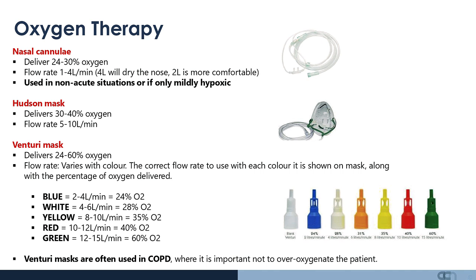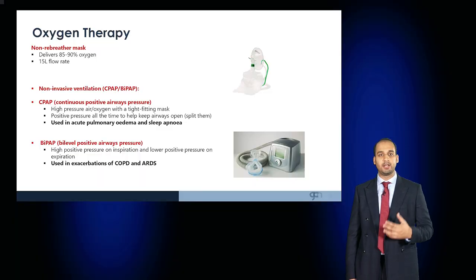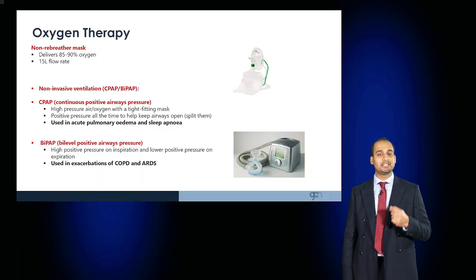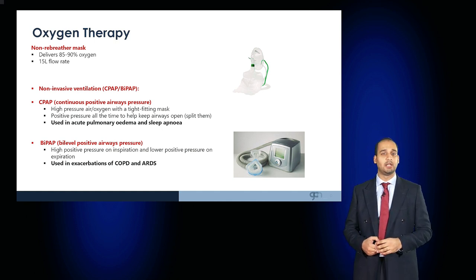Venturi masks can deliver controlled amounts of oxygen. The device uses the Bernoulli principle and varies and mixes the environmental oxygen with the delivered oxygen. A blue device can deliver 24%, a white 28%, yellow 35%, red 40%, and a green can deliver 60% oxygen. These are often used for patients with COPD where it's important not to over-oxygenate the patient. In higher acuity situations, a non-rebreather mask can be used which can deliver 85 to 90% oxygen and tolerate a flow rate of up to 15 liters of oxygen per minute.